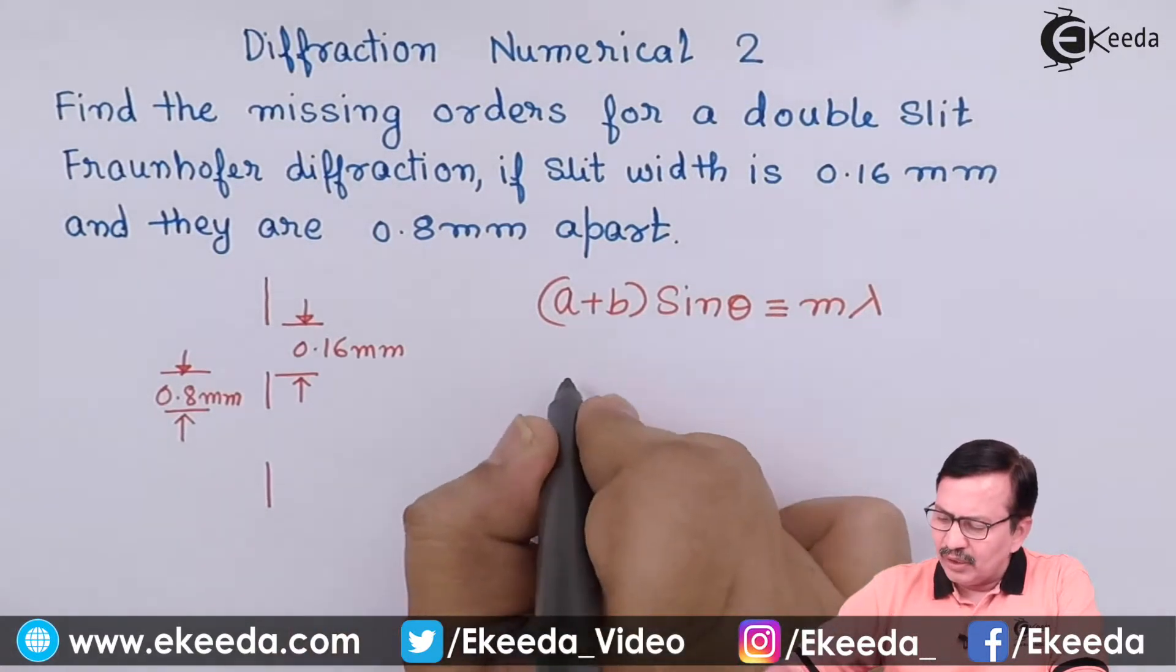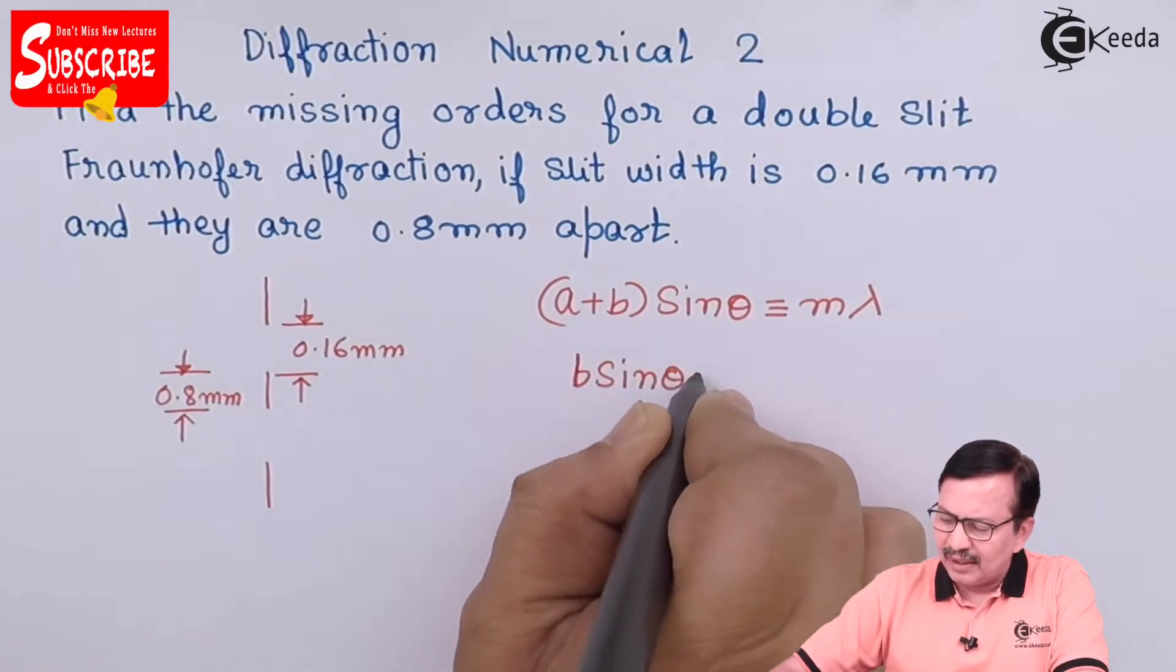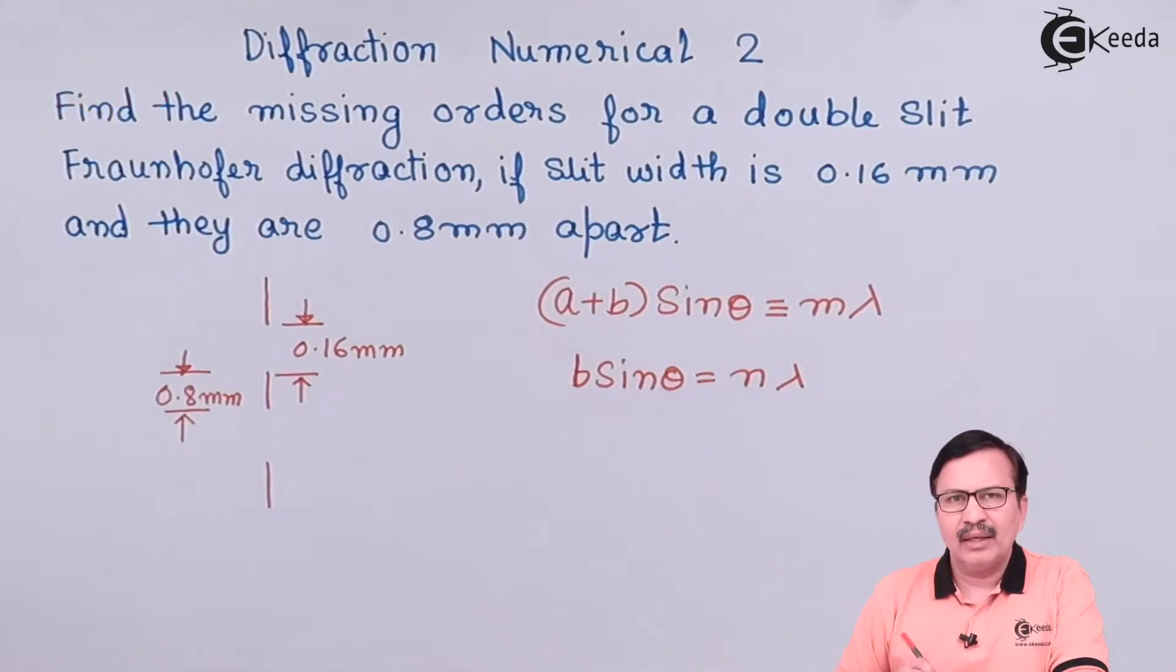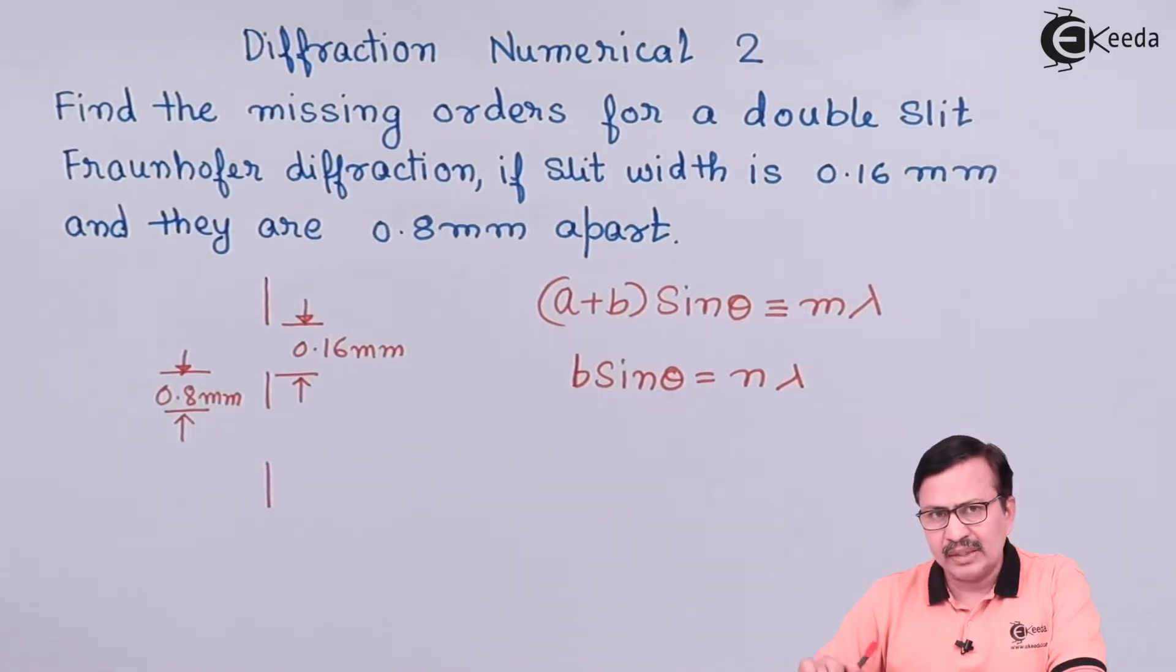Similarly, you are going to write this expression as b sin theta is equal to n into lambda for the single slit minimas. So this is the condition for the single slit minimas.